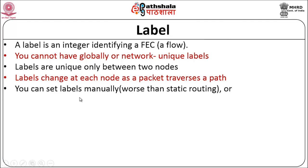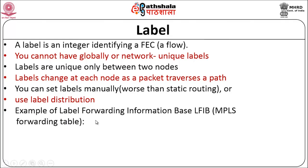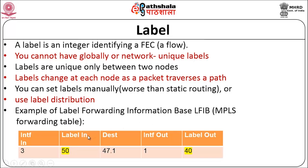Labels can be set manually, which is cumbersome, or using a label distribution protocol. The label forwarding information base shows the incoming interface, incoming label, destination address, outgoing interface, and outgoing label. For example, a packet coming in with label 50 goes out with label 40. When a packet arrives, you look up the table, find the label, change it to the new value, and send it out on the specified interface — a simple and fast process.